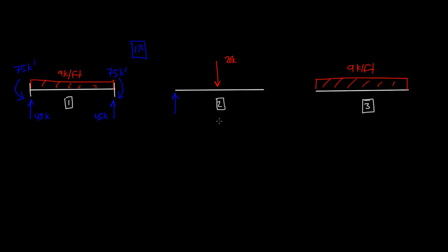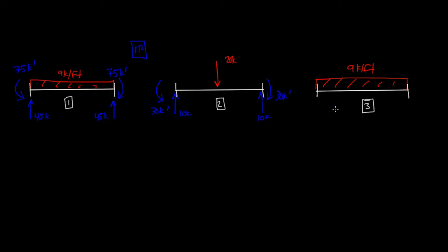For element 2, we have 20 kips going down, so we have 10 kips going up on the left and 10 kips going up on the right. We have a resisting moment of 30 kip-foot on the left and 30 kip-foot on the right. These are the internal reactions at the end of each member. Element 3 is the same as element 1, so we have 45 kips going up on the left and 45 kips going up on the right.